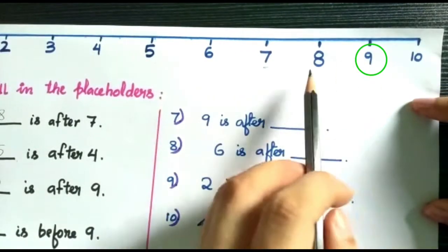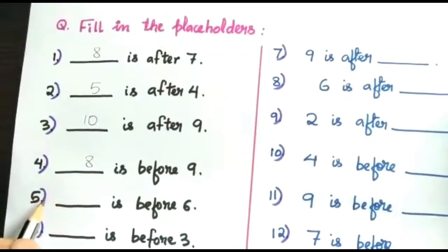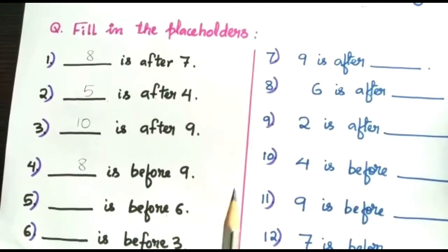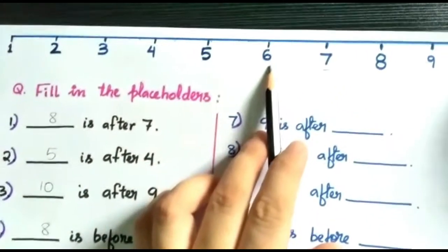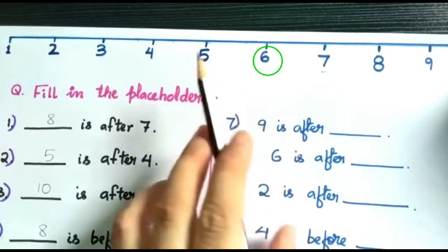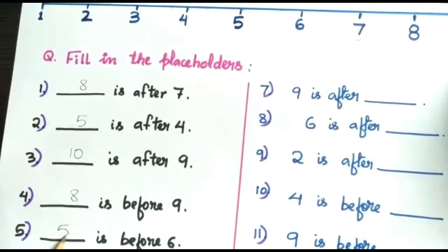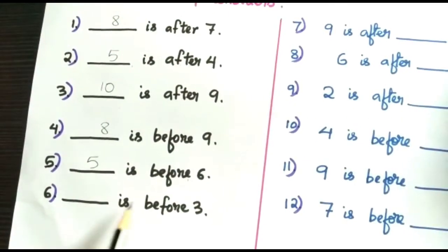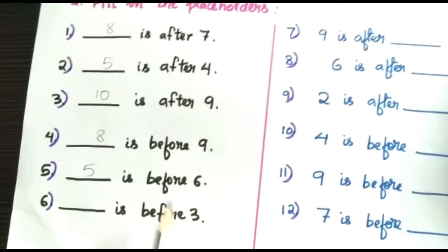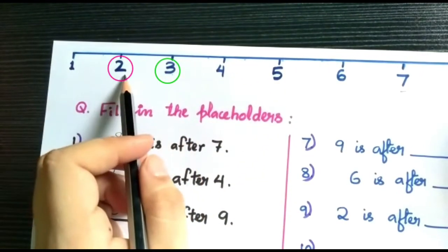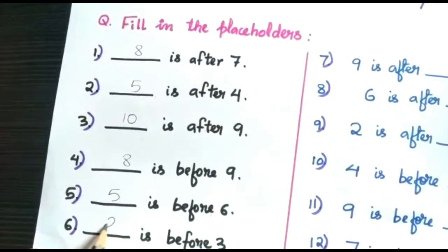Yes, eight — eight is before nine. Now number five: dash is before six. Before six, what comes before six? Six ke pehle wali backward number kaun sa hai? Very good, five is before six. Now number six: dash is before three. Before three, what comes before three? Three ke pehle wali number kaun sa hai? Backward number is two. That's right, two.